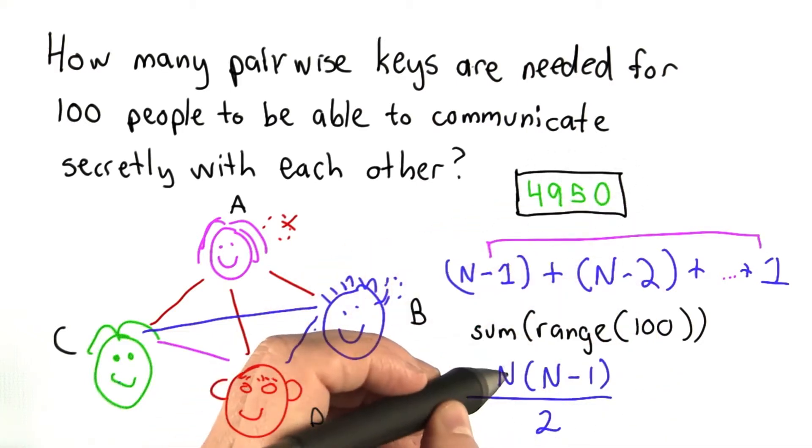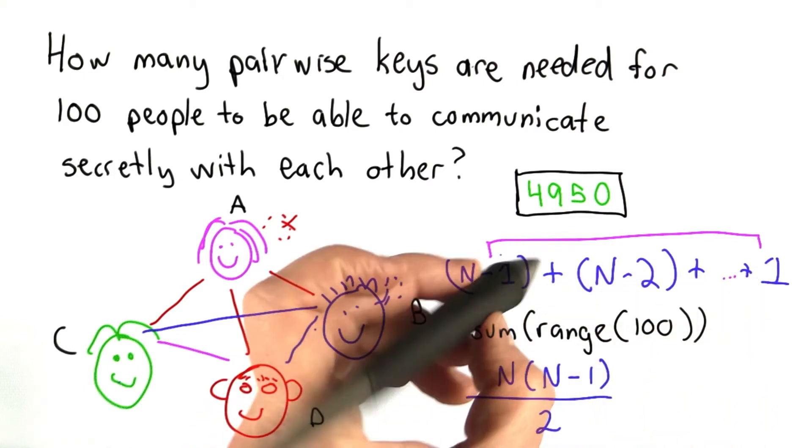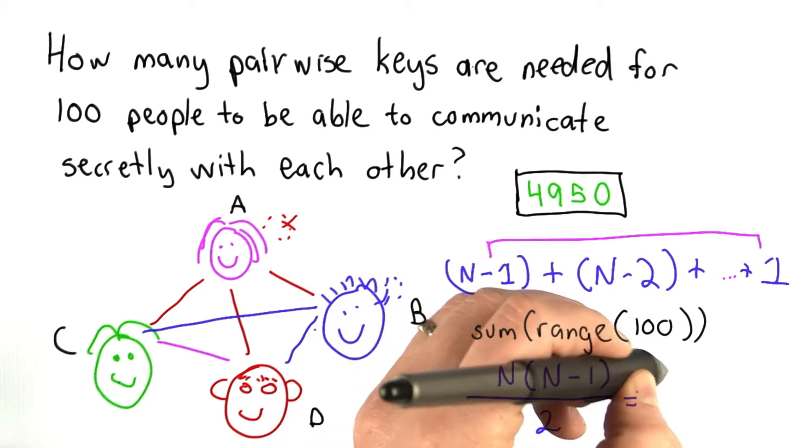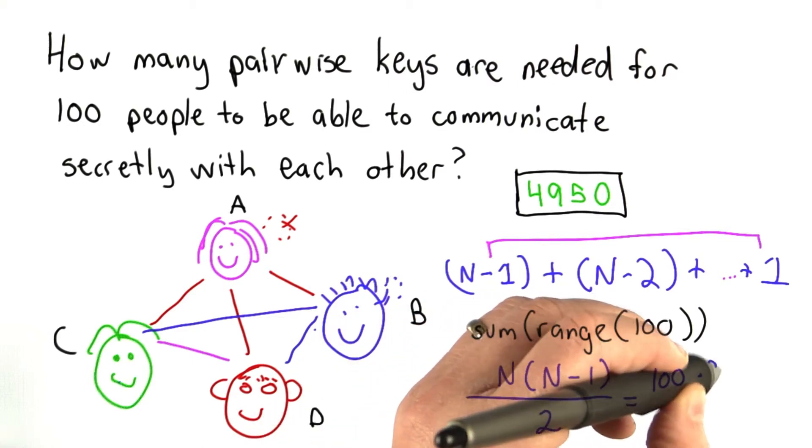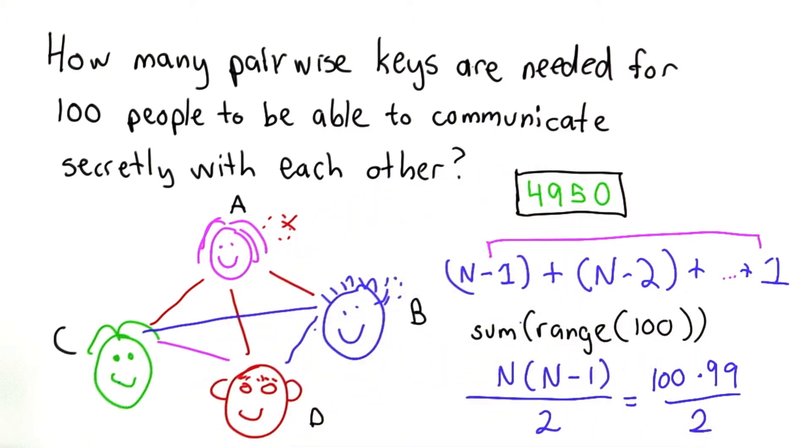We could also compute this using the formula. We have n minus 1 plus 1, that's n, times n minus 1 over 2. So that would be equal to 100 times 99 divided by 2, which is the same answer we got by summing all the numbers using Python.